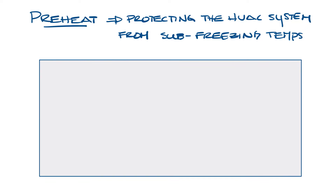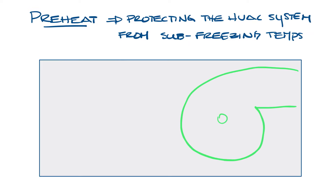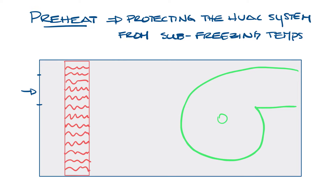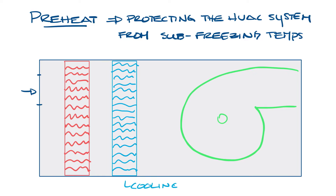So let's draw an air handler casing here, and then we'll put the fan on this end, and the air inlet on this end. And then we'll draw in the heating and cooling coils. With preheat, you put the heating coil before the cooling coil. So let's say you have a 100% outside air unit. In the winter, when the outside air gets below freezing, you want to protect the cooling coil from freezing. The preheat coil is before the cooling coil — it'll warm up the air before it passes through the cooling coil, protecting the coil.